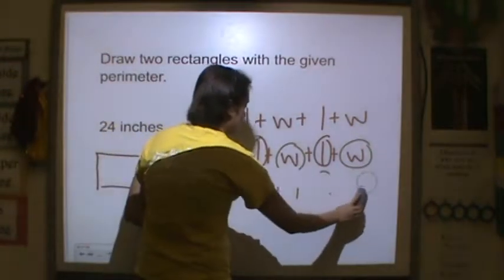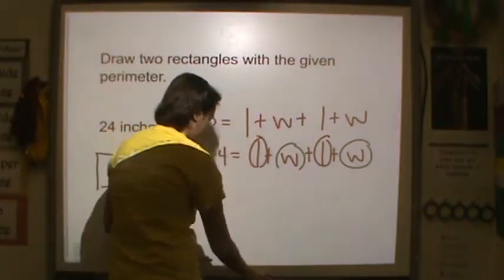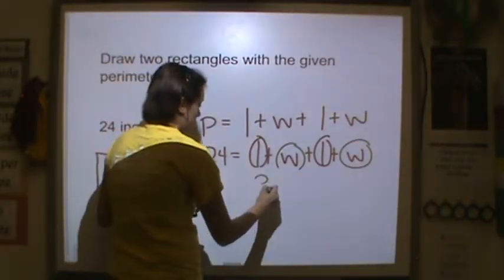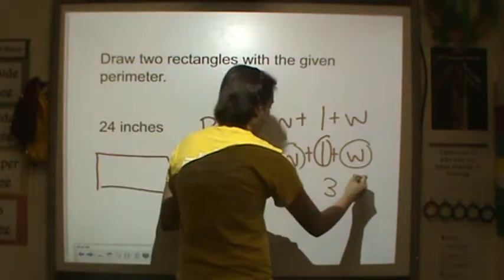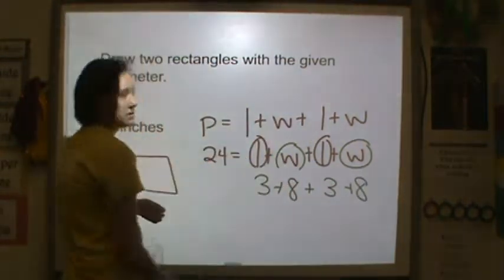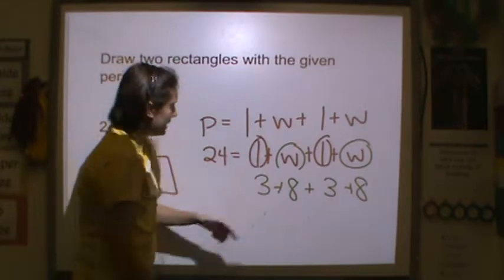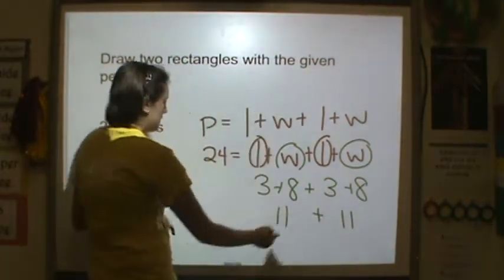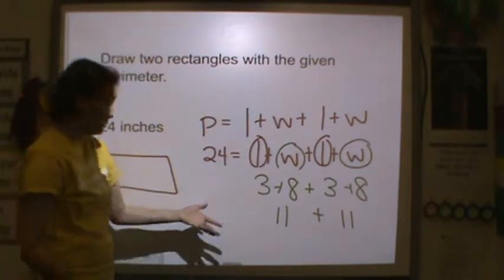So my numbers need to be bigger. Let's think of other numbers. Let's do 3 and 8. 3 plus 8, 3 plus 8, because my lengths and widths have to be the same. 3 and 8 is 11, 3 and 8 is 11. So 11 plus 11 is 22. Almost there.